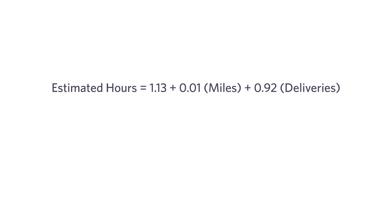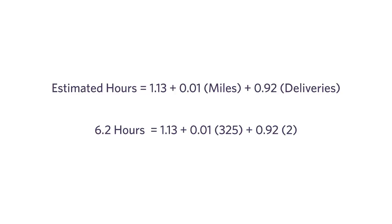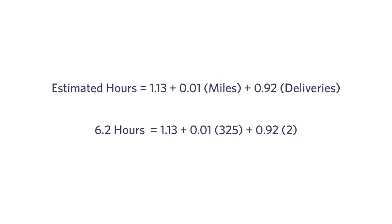So now we come to my point: I've got a truck that's going to travel 325 miles and make two deliveries. I can plug those into my estimated regression model — 325 for miles and two for deliveries — and the thing comes back and tells me 6.2 hours. Does this mean my truck will take exactly 6.2 hours? No. What it says is that on average, a truck that travels 325 miles and makes two deliveries can be expected to take 6.2 hours. When it doesn't, it might be more or less — that's random noise.